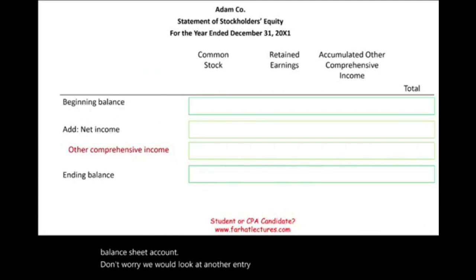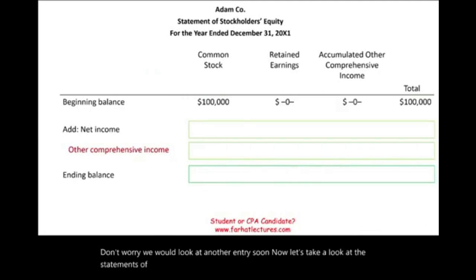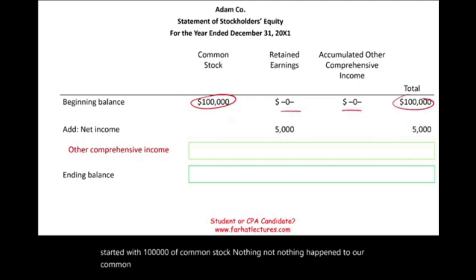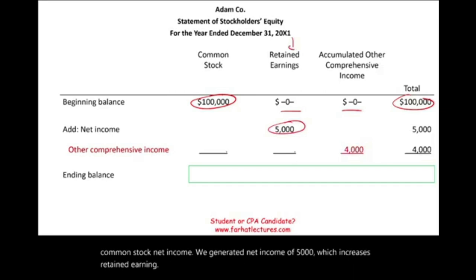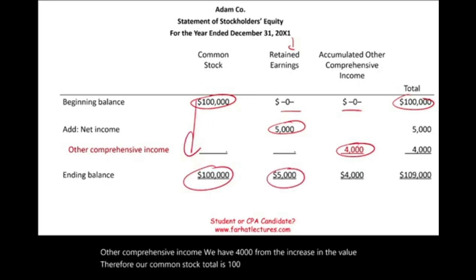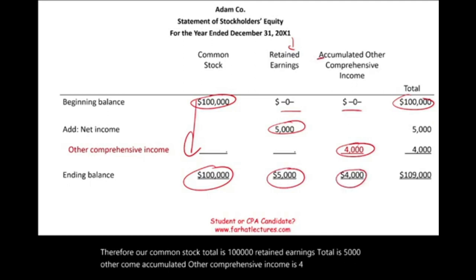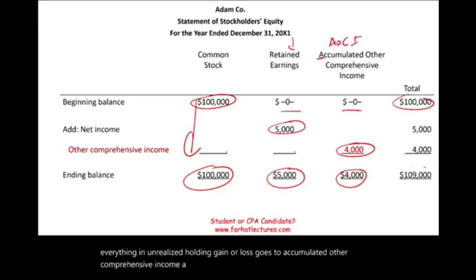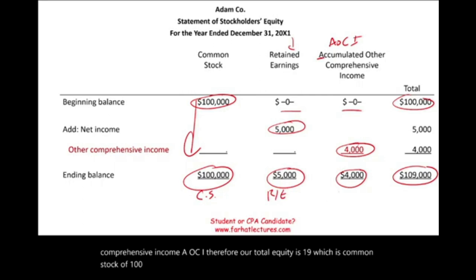Looking at the statement of stockholders' equity: we started with $100,000 common stock, net income of $5,000 increases retained earnings, and other comprehensive income of $4,000 goes to AOCI. At year-end: common stock $100,000, retained earnings $5,000, accumulated other comprehensive income $4,000, for total equity of $109,000.